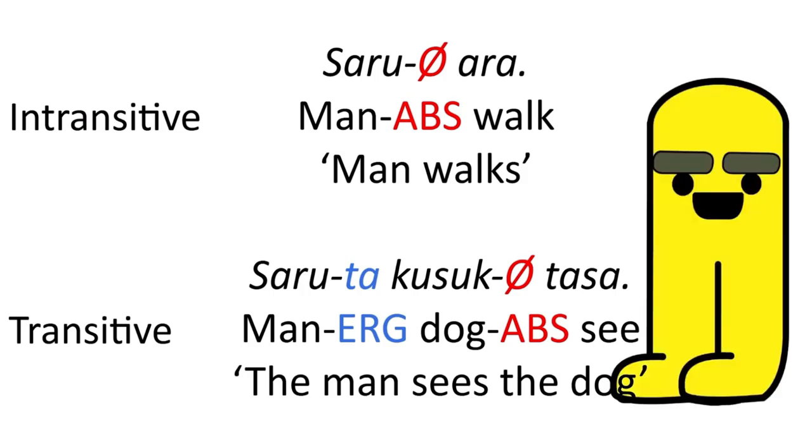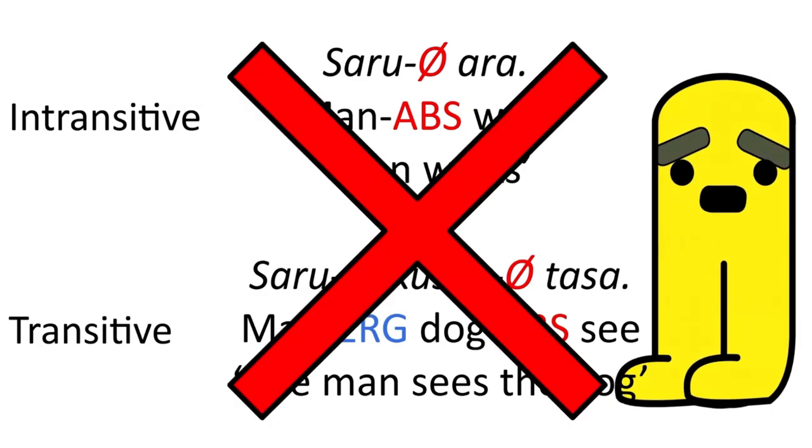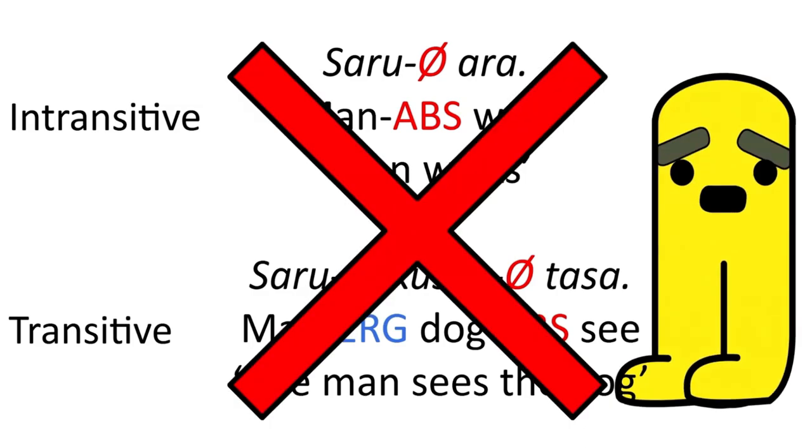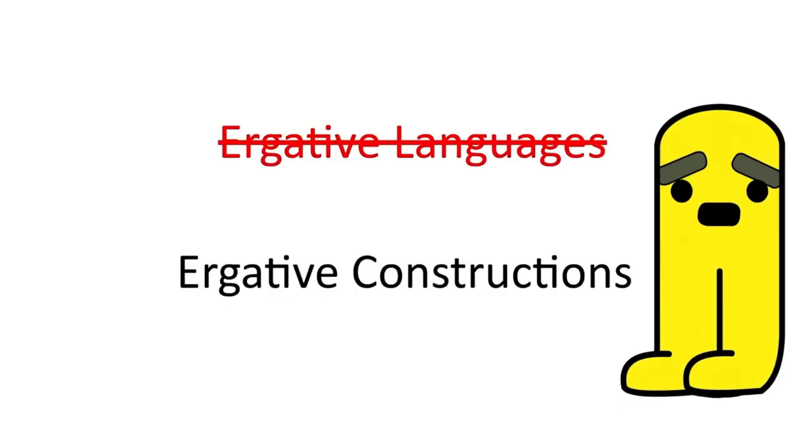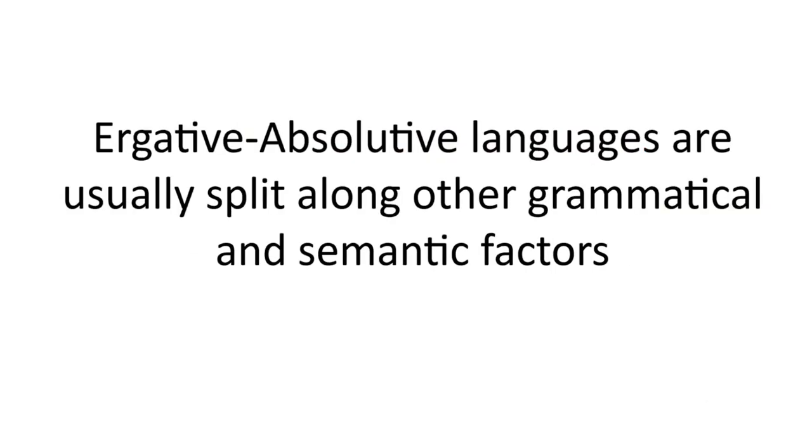However, things are usually not this simple. Now, many scholars have estimated up to one-fourth of the world's languages display ergative constructions. Now, notice how I said ergative constructions and not ergative languages. Because, believe it or not, no language is 100% ergative-absolutive, and that most languages that display ergativity have it split along other certain grammatical and semantic factors.